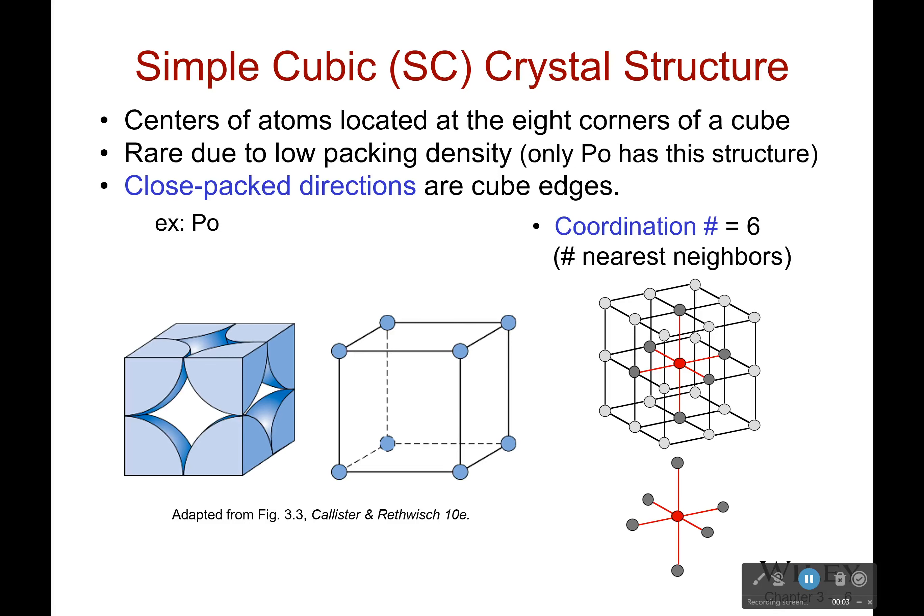The first structure we're going to look at is called the simple cubic crystal structure. What it means is that we have the center of atoms located at the eight corners of a cube.